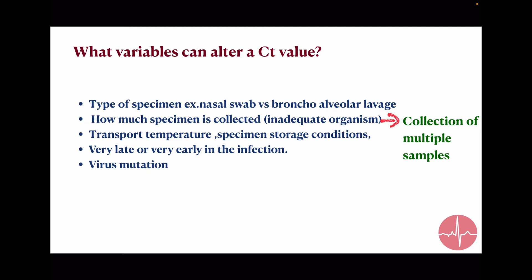Third is transport temperature and specimen storage conditions. Fourth is the disease stage. If we test in the very late stage or in the very early stage of the infection, there will be very low viral load. That will give a very high CT value. And the fifth is virus mutation. If we detect different genes, that will affect the CT value.